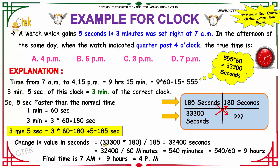33,300 multiplied by 180 divided by 185 gives 32,400 seconds. Converting into minutes by dividing by 60, we get 540 minutes. Converting 540 minutes into hours by dividing by 60, we get 9 hours.